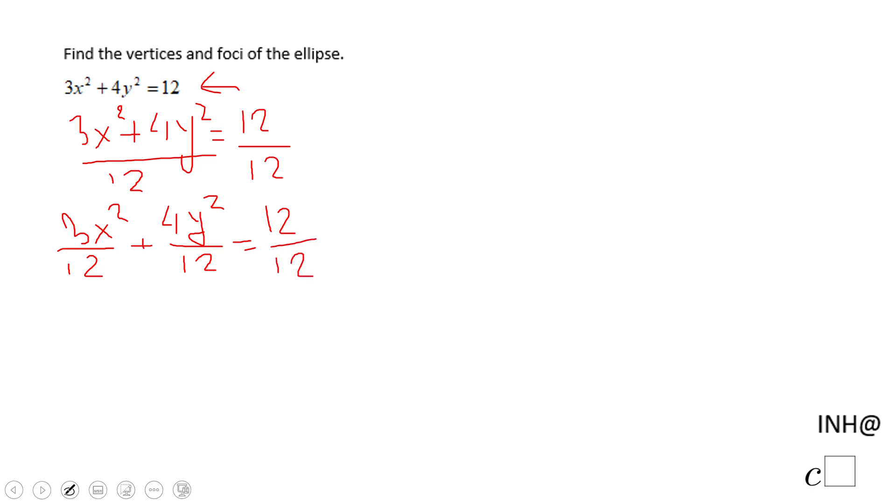Let's keep it like that for this moment and now let's simplify. 3 goes into 12 four times, so we have x²/4 plus 4 goes into 12 three times, so we have y²/3, and 12 over 12 is 1. This equation you see here is equivalent to this one. We like this more because that tells us the center is (0,0).